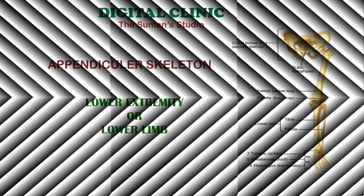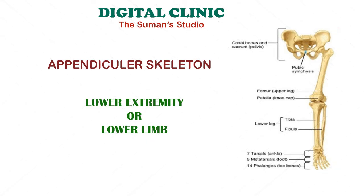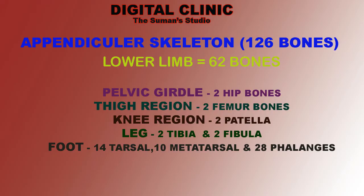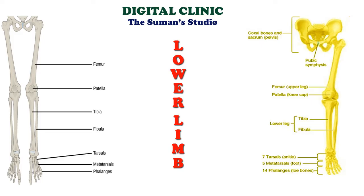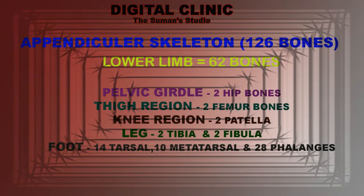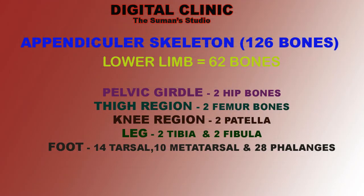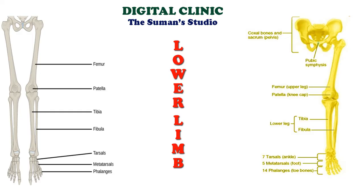The lower extremity consists of 62 bones. Out of these 62 bones, 2 hip bones are present in the pelvic region, also called innominate bones. The remaining 60 bones include: 2 femur bones in the thigh region, 2 patella in the knee region (also called the kneecap), 2 tibia and 2 fibula in the leg region. The foot region consists of 14 tarsal bones, 10 metatarsal bones, and 28 phalanges. Excluding the pelvic bone, each leg contains 30 bones, so both legs total 60 bones.